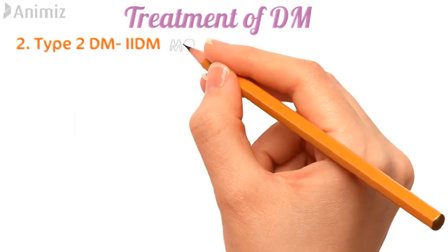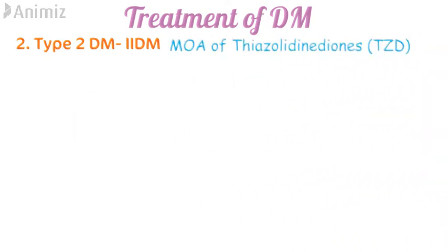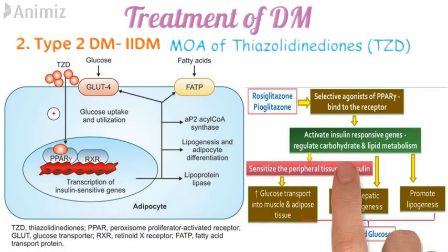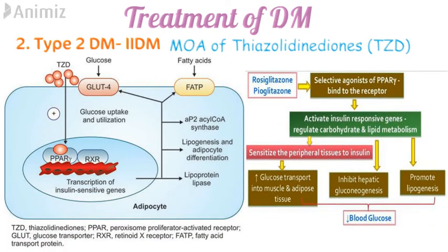Next is the mechanism of action of thiazolidinediones. The drugs in this class — pioglitazone and rosiglitazone — selectively bind to the PPAR-gamma receptor intracellularly in the nucleus of the cell. Binding to this receptor increases glucose transporter synthesis in muscle and adipose tissue, inhibits hepatic gluconeogenesis, and promotes lipogenesis, ultimately reducing blood glucose levels.